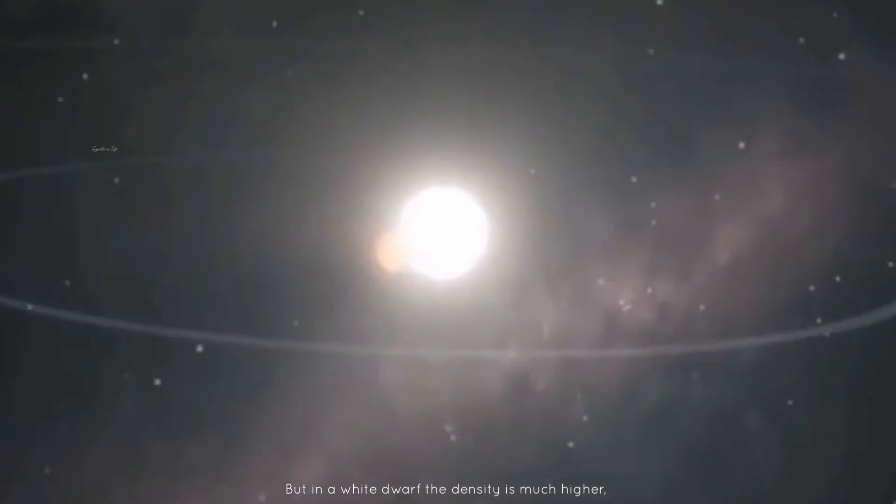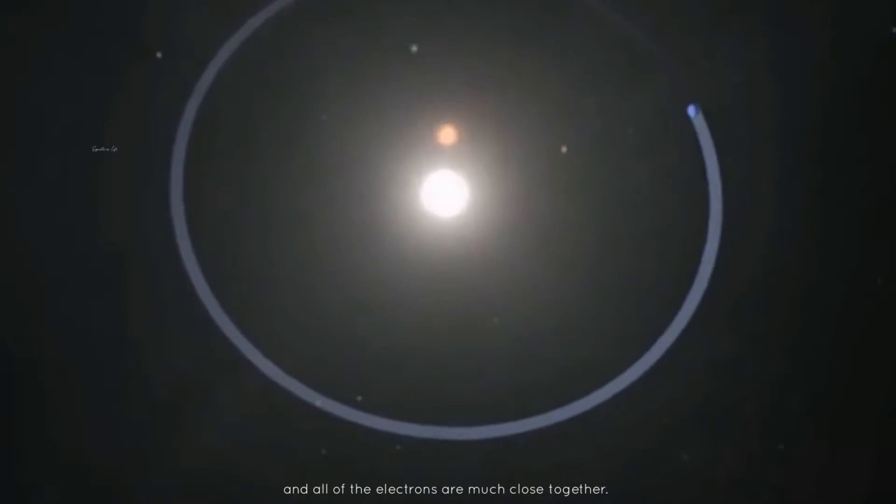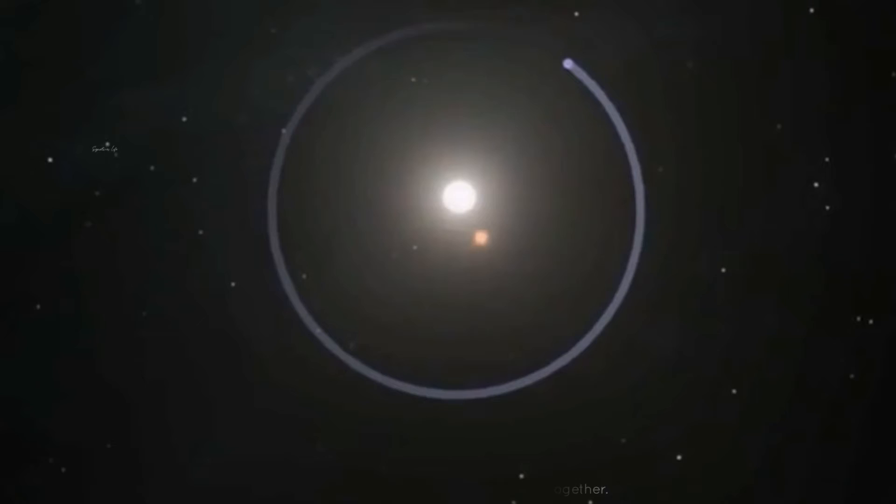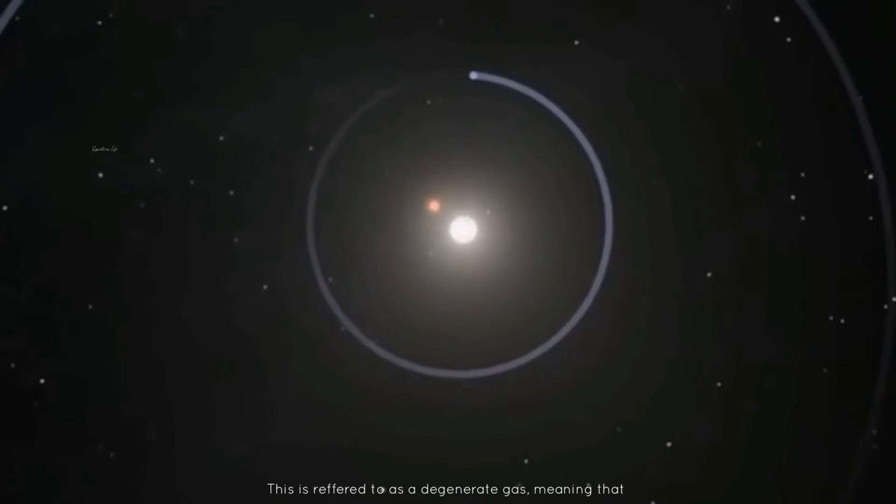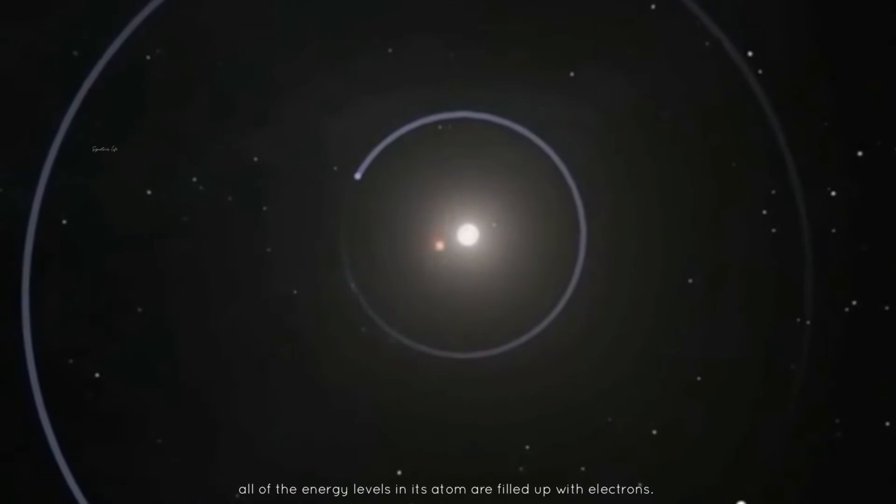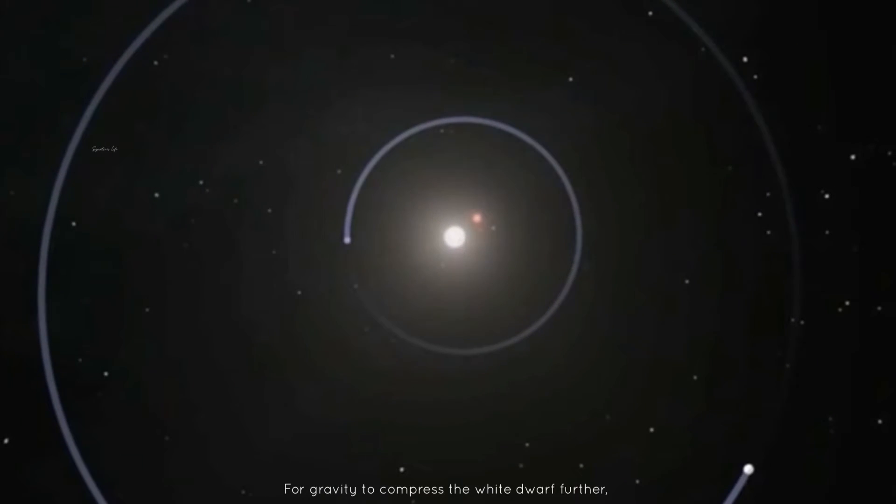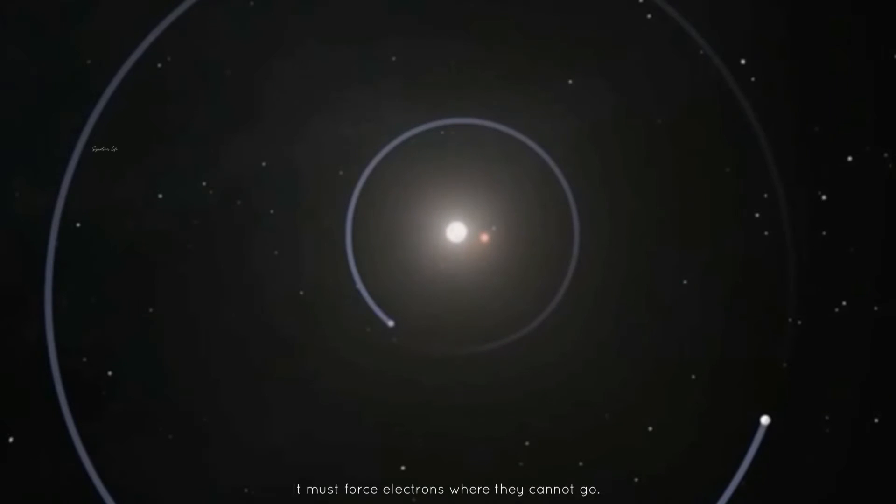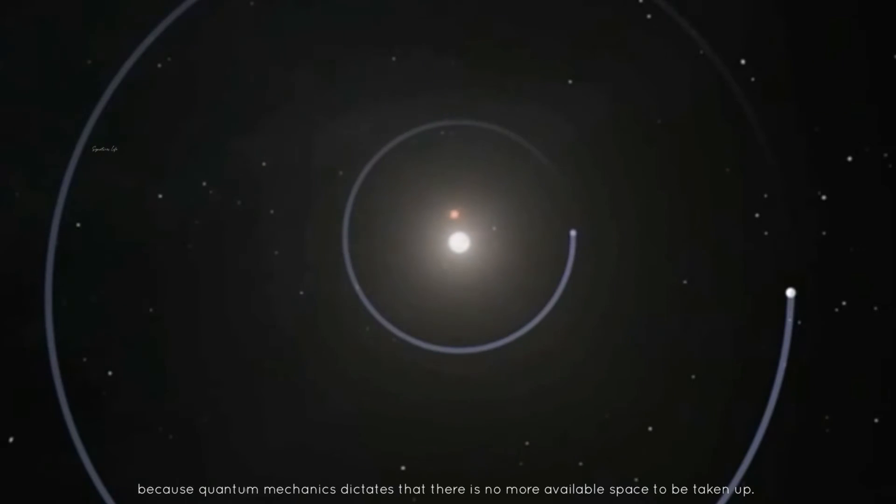But in a white dwarf, the density is much higher and all of the electrons are much closer together. This is referred to as a degenerate gas, meaning that all the energy levels in its atoms are filled up with electrons. For gravity to compress the white dwarf further, it must force electrons where they cannot go. Once a star has degenerated, gravity cannot compress it anymore because quantum mechanics dictates that there is no more available space to be taken up.